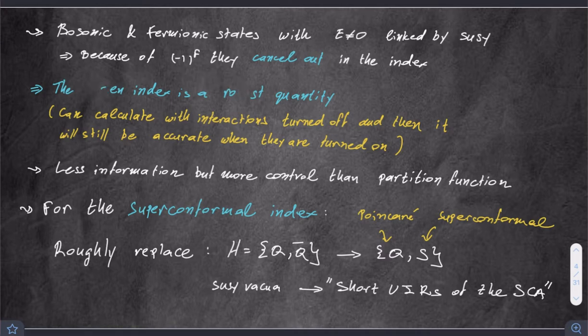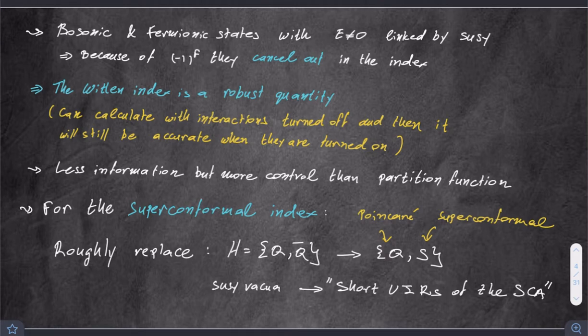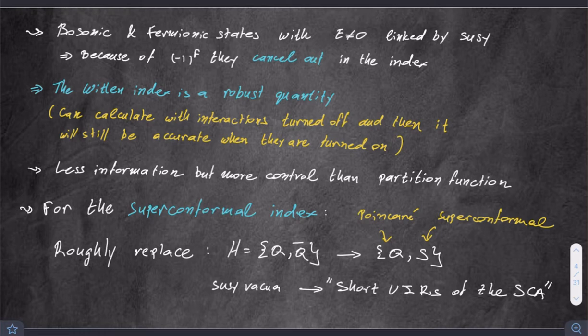You can calculate the Witten index, for example, with interactions turned off, and if interactions preserve supersymmetry, then what you calculate in the free limit is still an accurate result when these interactions are turned on. So why is this index useful? It does provide us less information than the full partition function, but it provides much more control. I can calculate in the free limit and then extrapolate the answer when the interactions are very strong — more control, less information. It's a very useful object to have, giving intuition about supersymmetry breaking.